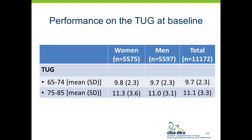For today's presentation, we're focusing on the timed up-and-go, or TUG, given that it is one of the most commonly used performance-based tests for balance screening and is endorsed by all clinical practice guidelines. Women and men between 65 and 74 years old completed the TUG on average in about 10 seconds, and those between 75 and 85 years old completed it in about 11 seconds. These values are within the range of what other studies have reported for healthy older adults.